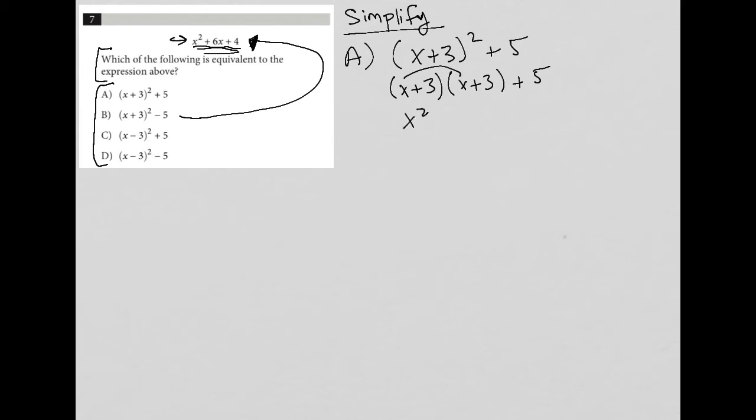So x times x is x squared. x times 3 is 3x. 3 times x is another 3x. And 3 times 3 is 9. And of course, I still have my plus 5.